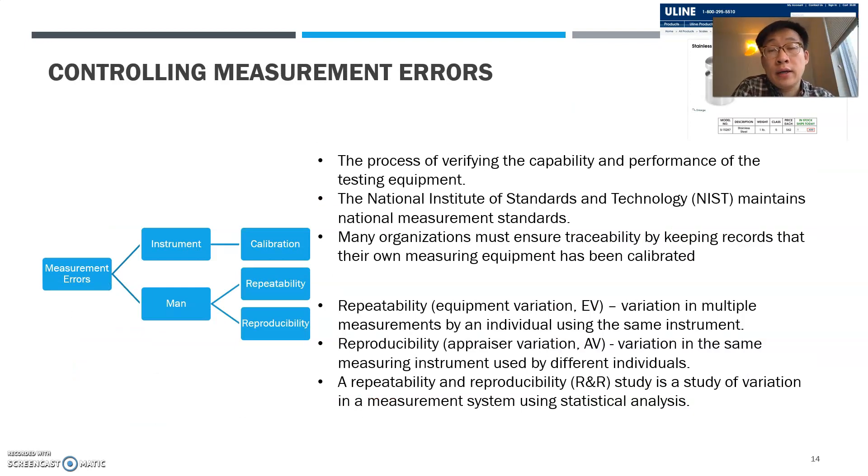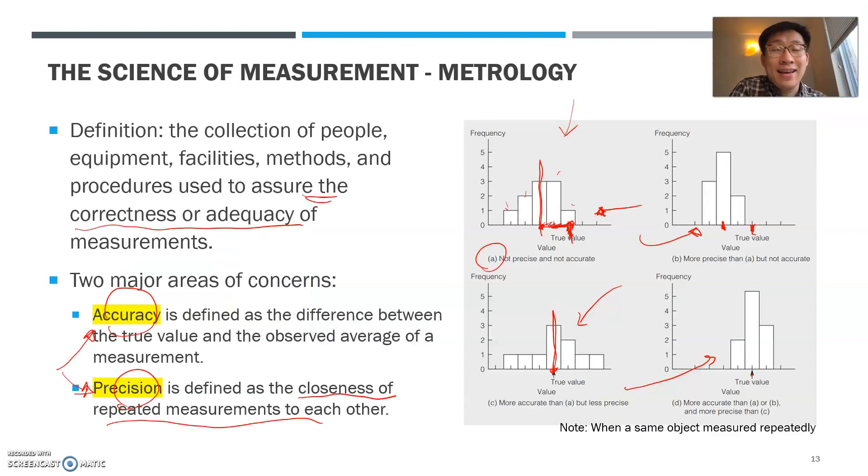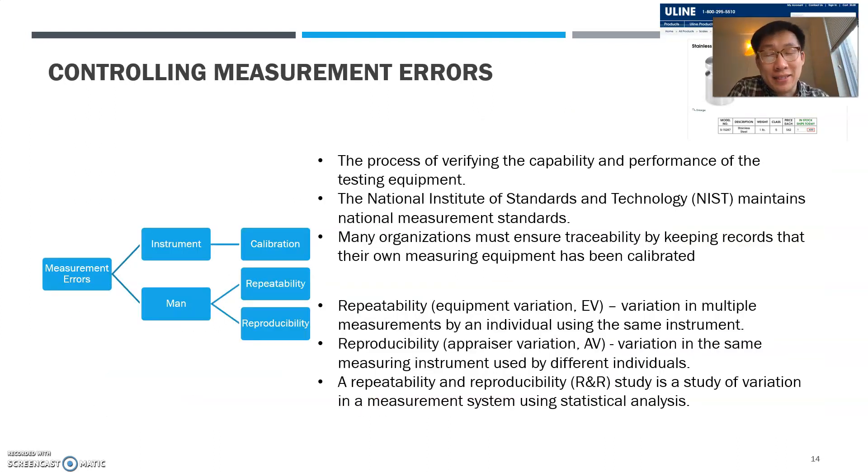The instrument can sometimes bring the error, can increase the variance. Sometimes the man, your operator, whoever does the measurement can bring you some kind of trouble. So for the instrument, you typically do the calibration. Basically, you're resetting your scale to the true measurement.